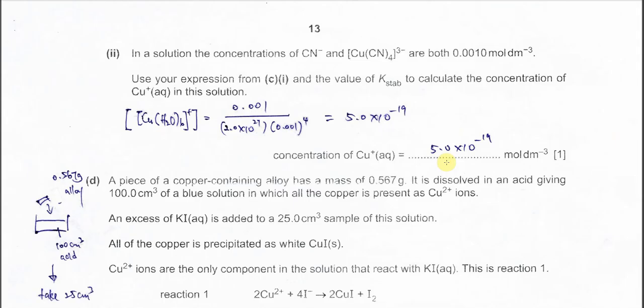Part 2. In a solution, the concentration of cyanide and this complex ion are both 0.001 mol per dm³. Use your expression in part 1 to calculate Kstab. So it's very easy, just substitute the values given. It's given 0.001 for the complex ion, substitute into Kstab and the concentration of cyanide to the power 4. You get this value, 5 times 10 to the positive 9 mol per dm³.